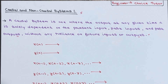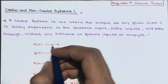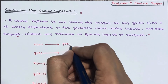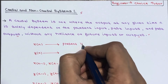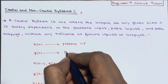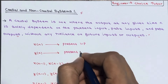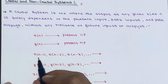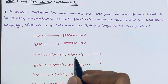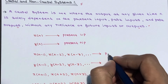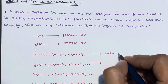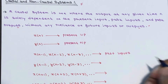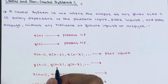You should know what is a future input, future output, and past input. Let me explain: x of n is the present input. Terms like x of n minus 1, x of n minus 2, x of n minus 3 are what we call past inputs.